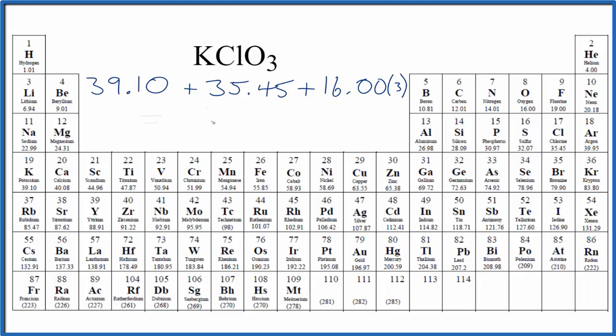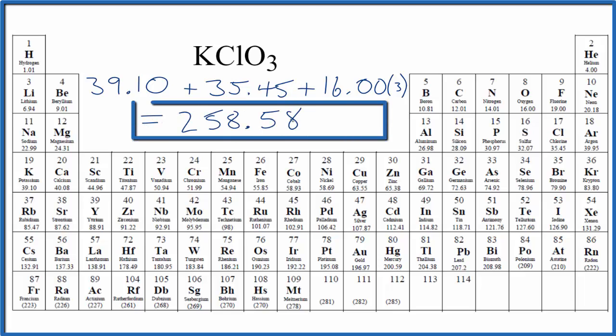Then we'll add these numbers up. We end up with a molar mass of 258.58 in the units, grams per mole. Note that my periodic table rounds to two decimal places.